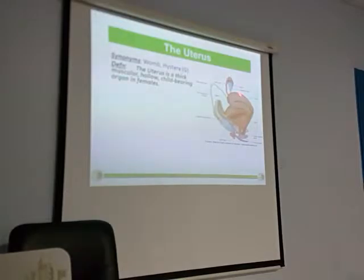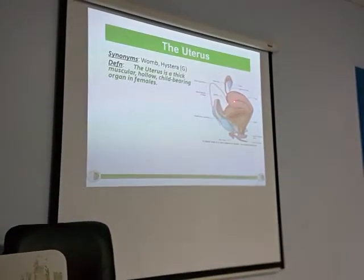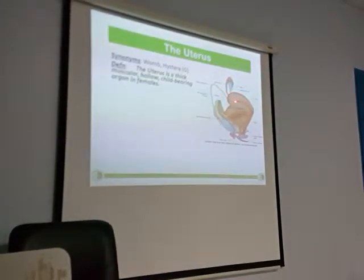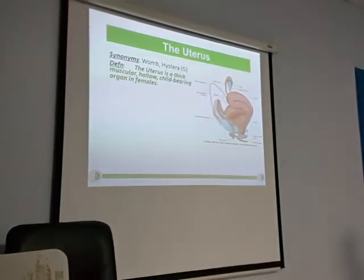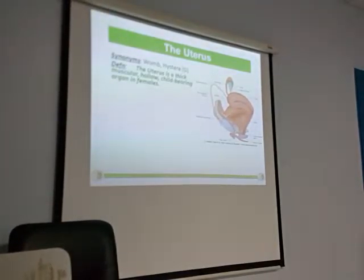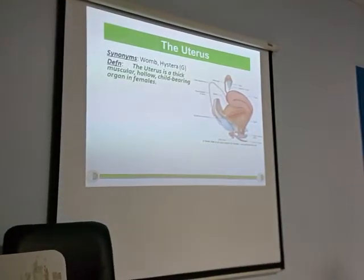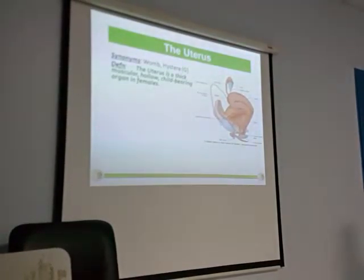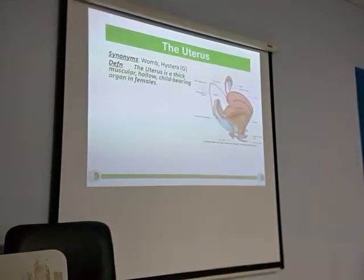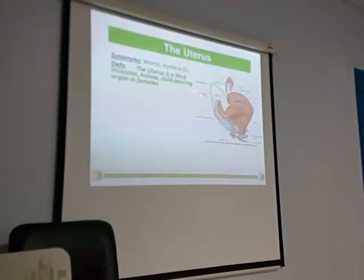The uterus is a thick muscular organ — you can see so much thickness. It has a lot of muscular layers. The lumen is actually very narrow — a very small lumen — unless it is pregnant. In the case of the non-pregnant uterus, the lumen is very small. In the case of pregnancy, it becomes much more — hollow and chain-bearing as it holds the fetus.